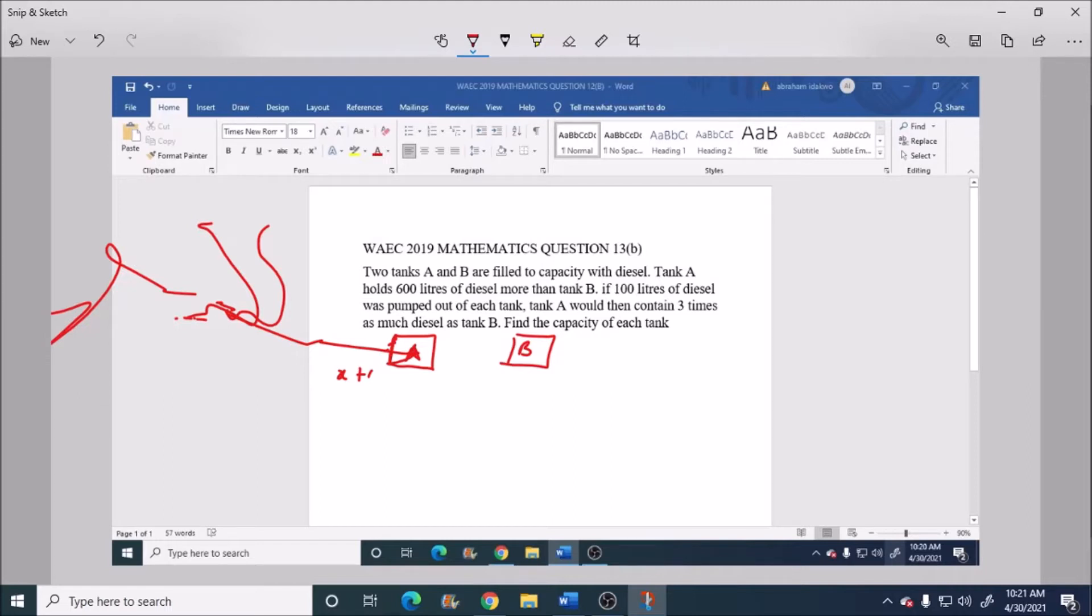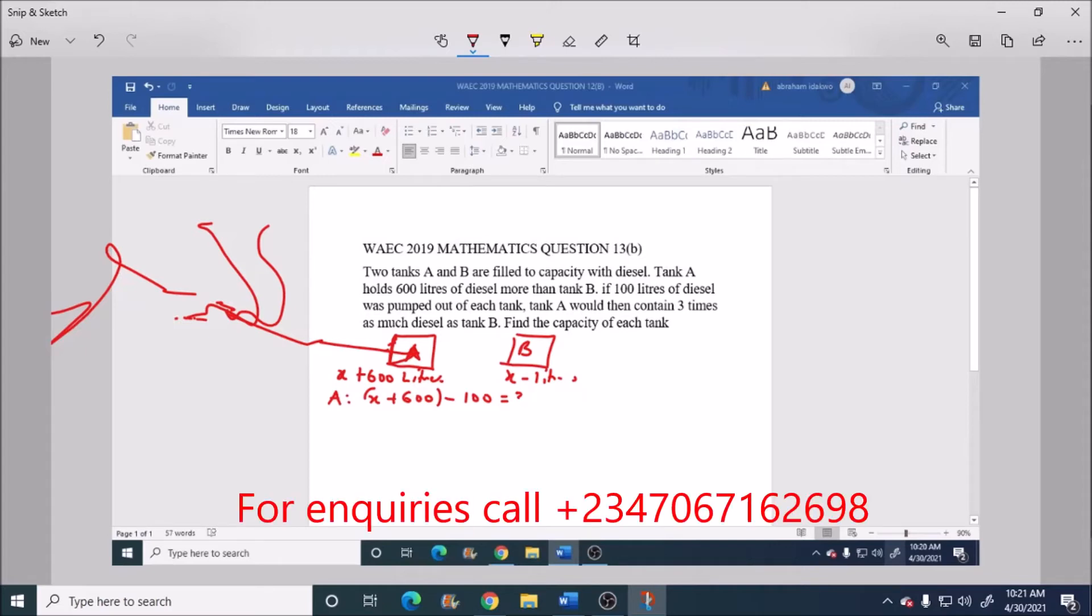tank A is X plus 600 minus 100 is equal to 3Y. So this will give us X plus 500 equals to 3Y. Call this one equation 1.